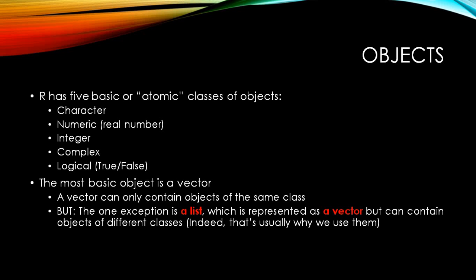As most things come with a caveat, here also there is an exception. There is an exception for the rule that vector can have only one type of object. That exception is a list, which is represented as a vector but can contain objects of different classes indeed. And that's usually why we use those lists, because it can contain objects of different classes.